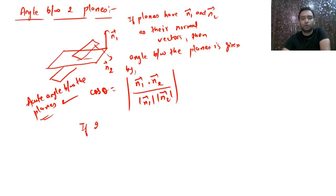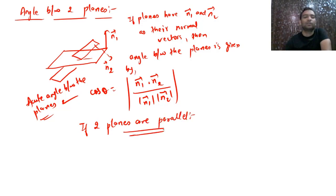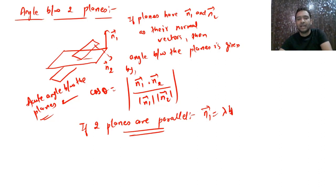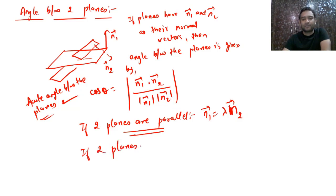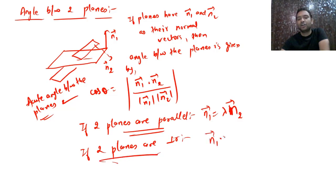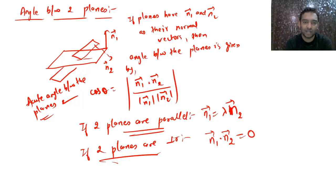If two planes are parallel, their normal vectors are parallel: **n₁** = λ**n₂**. If two planes are perpendicular, the dot product of their normals is zero: **n₁**·**n₂** = 0. So the angle between two planes equals the angle between their respective normal vectors.